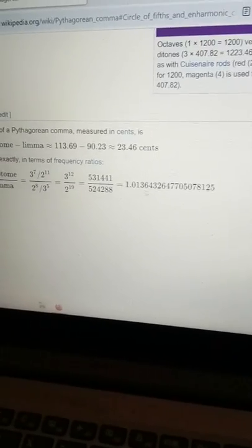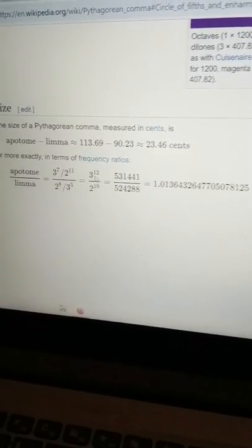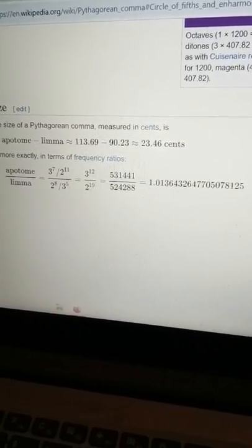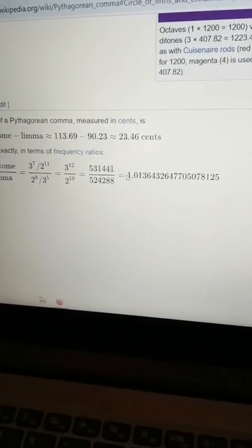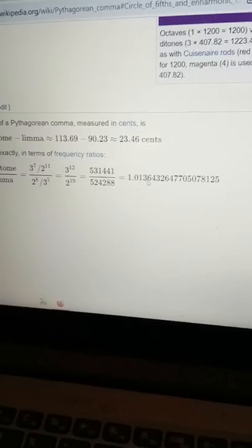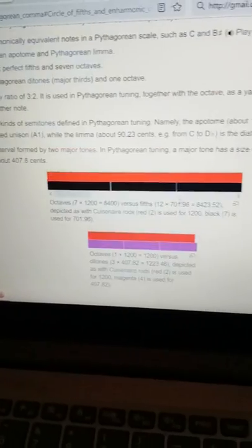So what I discovered is that if you... They give here... Now, this is the sleight of hand in the mathematics. They have 3 to the 12th divided by 2 to the 19th, and that's from Philolaus. And so this is the number you get for the Pythagorean, the value of the Pythagorean comma.